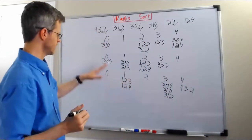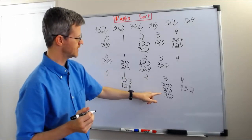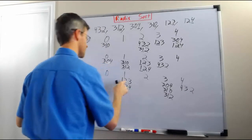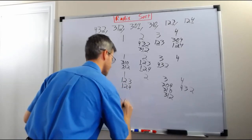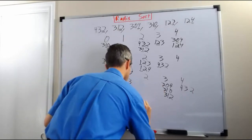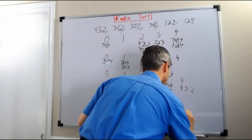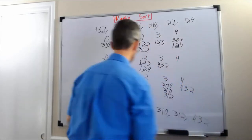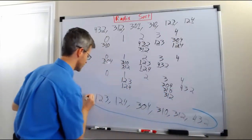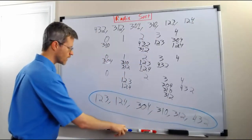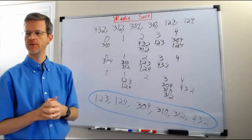Now, reading across from left to right and top to bottom, we have the numbers sorted: 123, 124, 304, 310, 312, 432. Reading carefully from top to bottom in each bin, the output of our sort is 123, 124, 304, 310, 312, 432. And this process would work for any set of 3-digit numbers, although you would use 10 bins instead of 5 if you have digits from 0 through 9 inclusive.